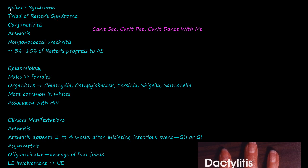Let's talk about the characteristics of Reiter's syndrome. There's a classic triad — a triad is signs and symptoms of three. The triad of Reiter's syndrome is conjunctivitis, arthritis, and non-gonococcal urethritis.